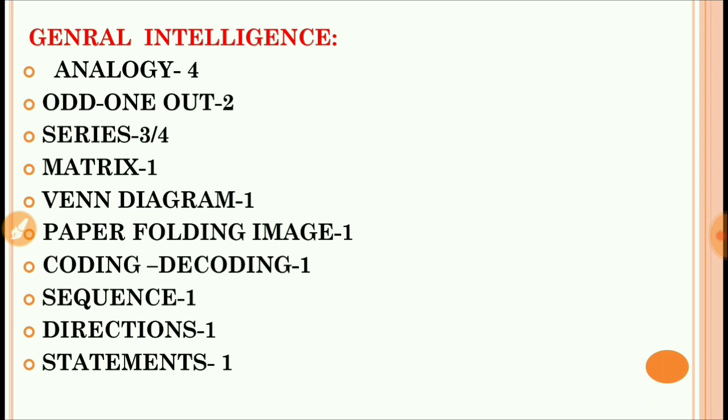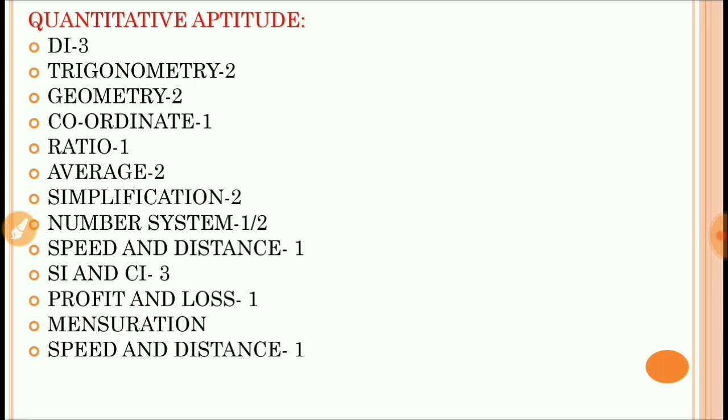In Quantitative Aptitude, there was DI from which three questions were asked. Trigonometry was two questions, geometry two questions, coordinate geometry one question, ratio proportion one question, average two questions, simplification two questions, number system one or two questions, then speed and distance one question, simple interest compound interest three questions. If you see, DI and simple interest compound interest had more questions. DI is not very tough in SSC exam, it is normal simple kind of DI. For simple interest or compound interest, you should learn the formulas properly so that it will be helpful for your exam. Profit and loss one question, mensuration one question, speed and distance one question were asked.